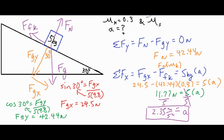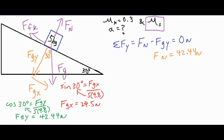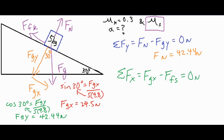Now let's rework this and solve for the coefficient of static friction. We'll erase the bottom half of our work. The sum of forces in the x direction is still fgx minus the force of static friction, but now that equals zero newtons — not five kilograms times a — because the object is at rest, and that's when we apply static friction.